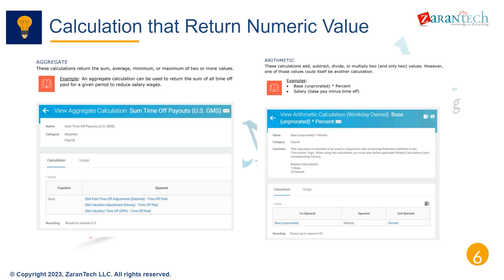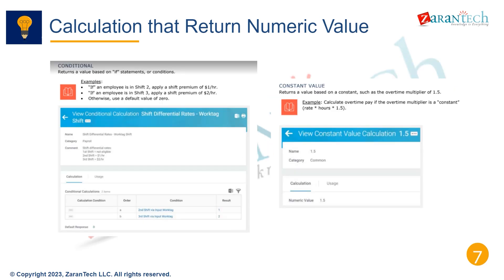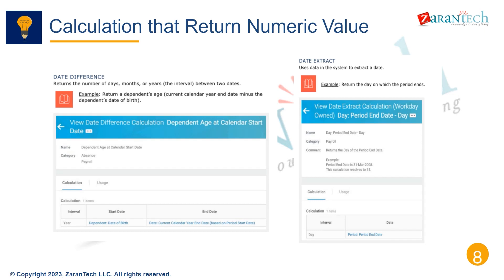The most common type of calculation returns a numeric value and can perform various operations to determine amounts. One common use case is to look up a pay rate based on job profile and pay grade, retrieving the hourly wage rate from a compensation matrix. Another example is prorating a bonus based on the number of months employed during the bonus period — this involves dividing the target bonus by 12 and multiplying by the number of months worked, returning a numeric value that determines the bonus payout amount.